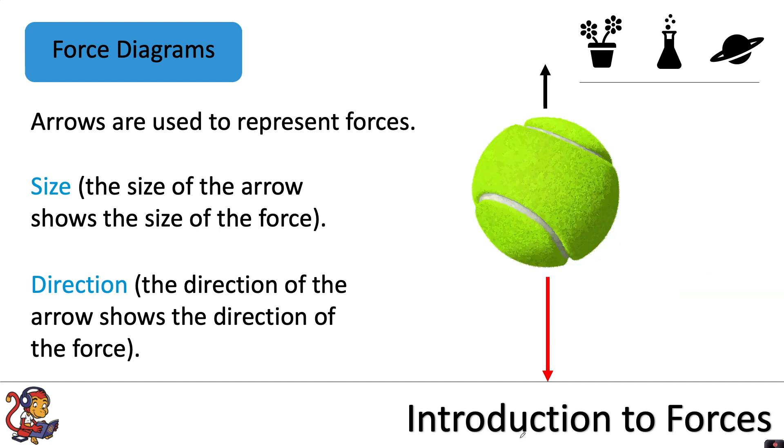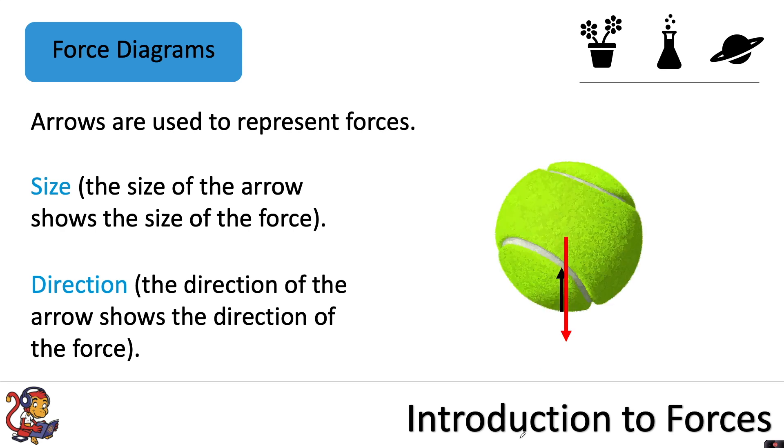On this tennis ball that's falling towards the earth, you might see the forces weight, or you could again see gravitational force, and air resistance pushing against the tennis ball. Now it's likely that you'll see lots of force diagrams like this, but you may also see the arrows in different positions. For example, you may see the weight coming from the centre of the mass of the object, and you may see the air resistance arrow from where the air resistance is actually acting at the surface of the ball.